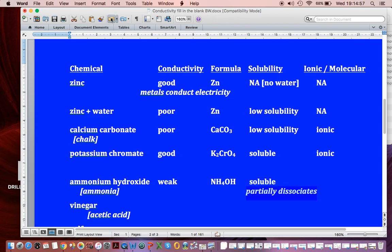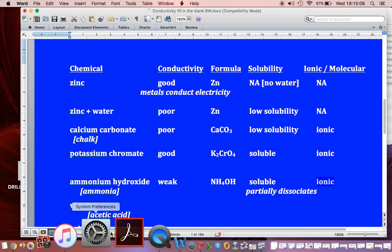And it's NH4OH. It's soluble. But it doesn't fully dissociate. And so we call it ionic, if we were to write the NH4OH.